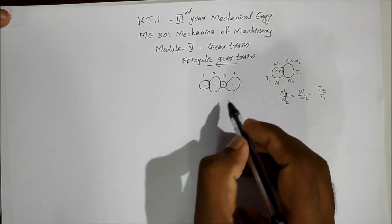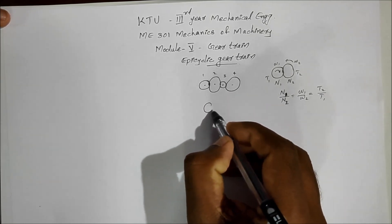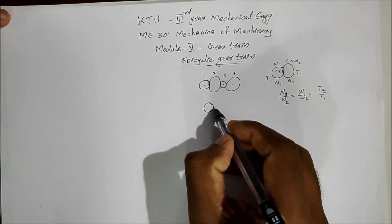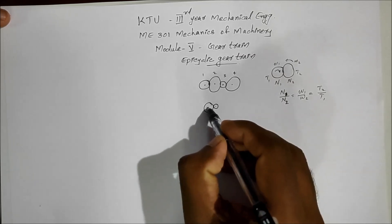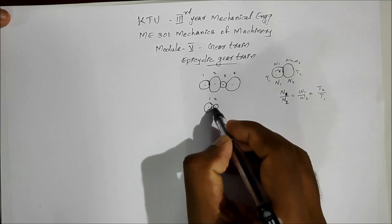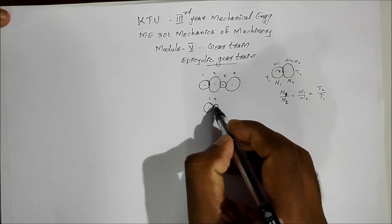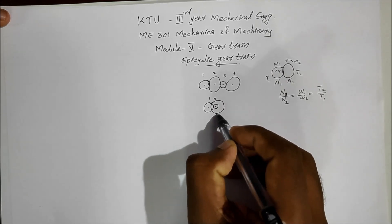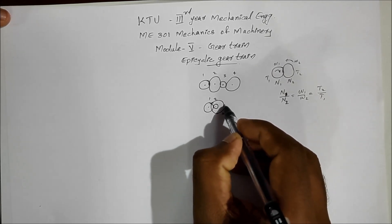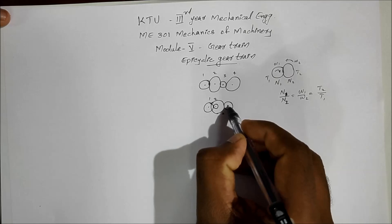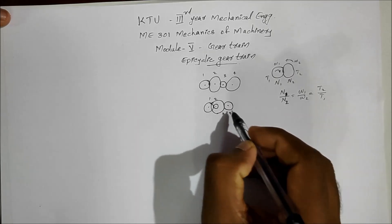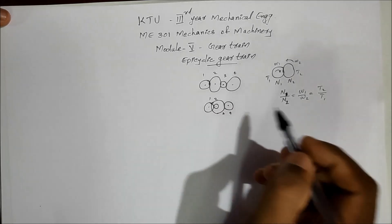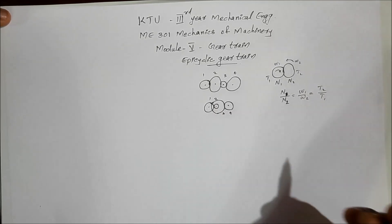If the first gear meshes with a second gear, and this second gear shares the same shaft as a third gear, which then meshes with a fourth gear, this type of gear train is called a compound gear train. Now, the epicyclic gear train means...